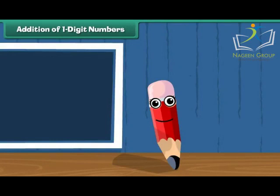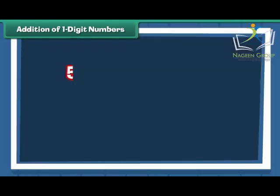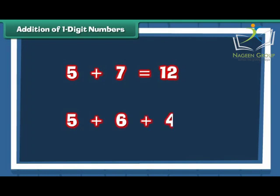Addition of 1 digit numbers. Let us begin with the addition of single digit numbers. 5 plus 7 is equal to 12. 5 plus 6 plus 4 is equal to 15.